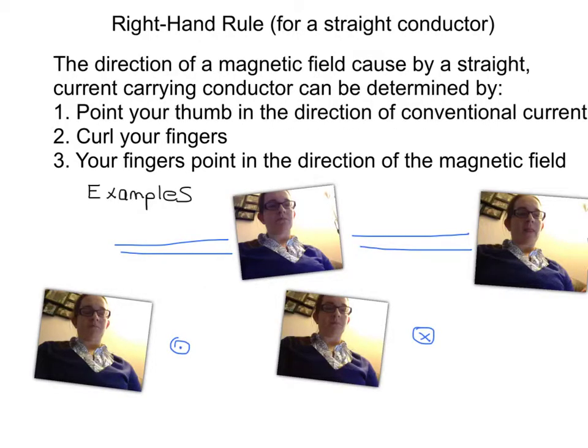So we need to actually introduce our right-hand rule, so that we can represent what happens in Oersted's principle. The direction of a magnetic field caused by a straight current-carrying conductor can be determined by: 1. Point your thumb in the direction of the conventional current. 2. Curl your fingers. 3. Your fingers point in the direction of the magnetic field. We know the magnetic field created is circular, and those curled fingers tell you which direction to draw the arrow on.